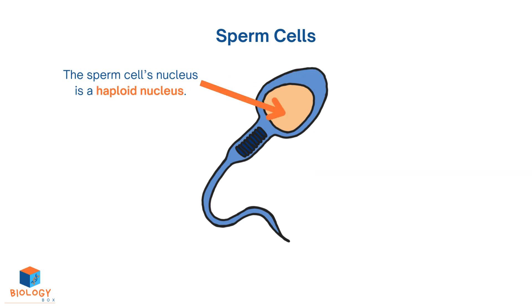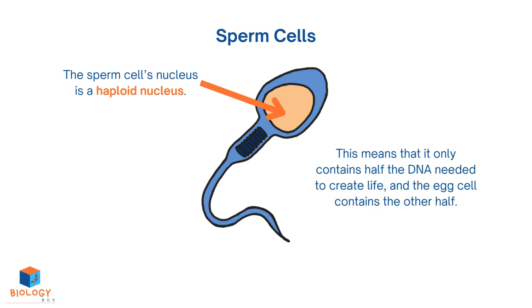The sperm cell's nucleus is a haploid nucleus. This means that it only contains half the DNA needed to create life, and the egg cell contains the other half.